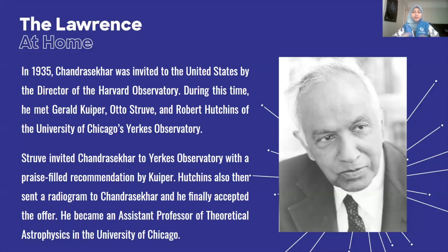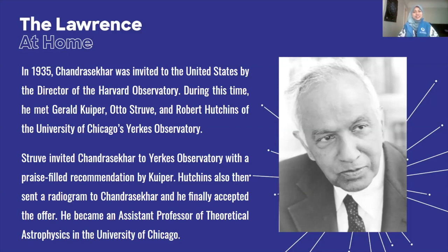When they met him, they were all really impressed by him. It was to the point that Struve invited Chandrasekhar to work at the Yerkes Observatory, and he was also given a praise-filled recommendation by Kuiper. Hutchins also then sent a radiogram to Chandrasekhar, and it was after this that Chandrasekhar finally accepted the offer. So he became an assistant professor of theoretical astrophysics at the University of Chicago. And he stayed at the University of Chicago for the rest of his career, and he became a permanent resident of the United States.